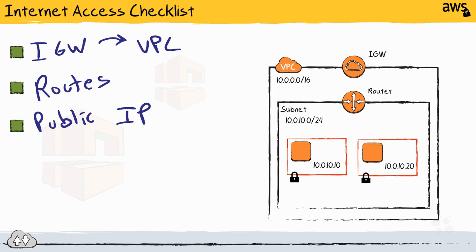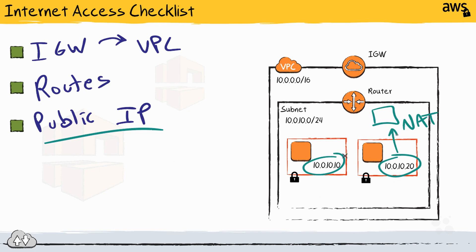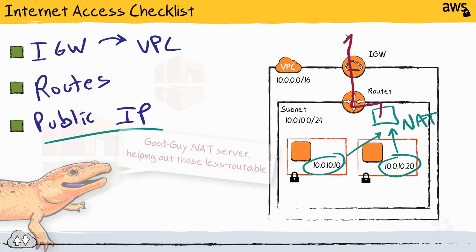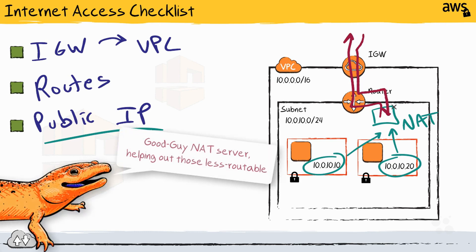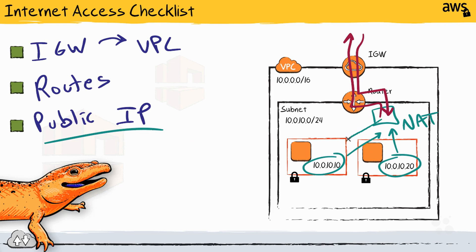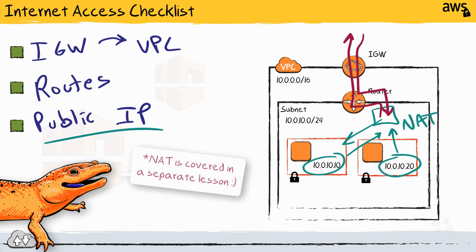In many situations, organizations won't assign a public IP address directly to their instances. Instead, they could use private IP addresses and put the instances behind a network address translation server. The NAT server allows them to take their private IP addresses and borrow a public IP address — when requests come back, the NAT forwards them on to the original private IP address that made that request. Just be aware that NAT is one of the ways to meet the public IP address requirement.